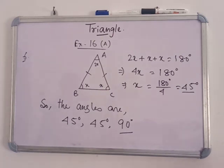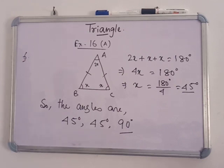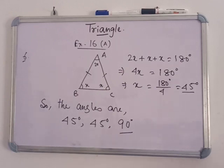In number 7, a figure is given and you have to find the value of A plus B plus C plus D plus E plus F. This figure consists of 360 degrees because there are six angles and two triangles. Triangle ACE equals 180 degrees and triangle BDF equals 180 degrees, so 180 plus 180 equals 360 degrees.